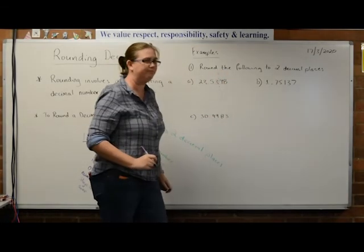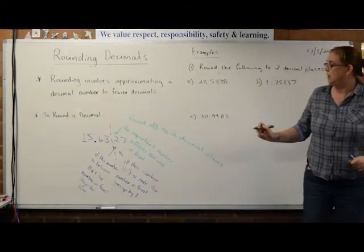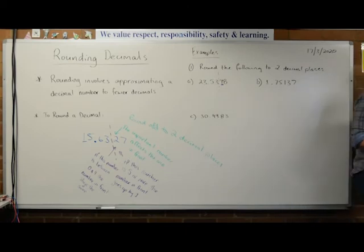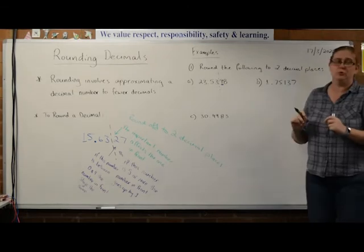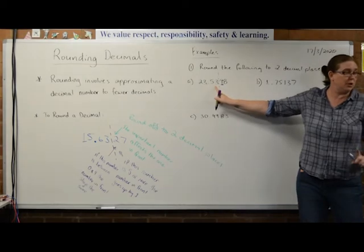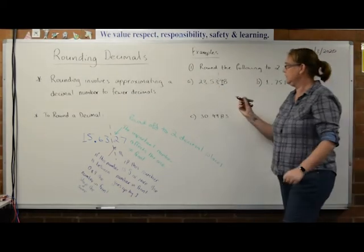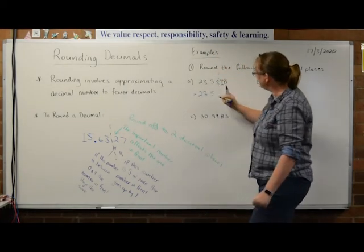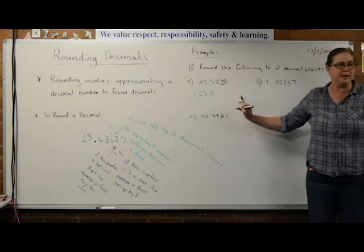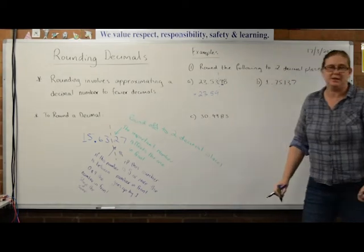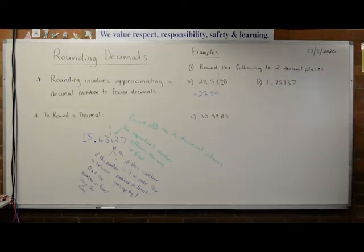Do a line. I need to look at this number and make a decision. Is it five or more? Yes, it is. So what do I need to do to this number? It needs to go up by one. So my new number is still 23.5, but instead of three, what is it going to be? Four. That's how easy it is.